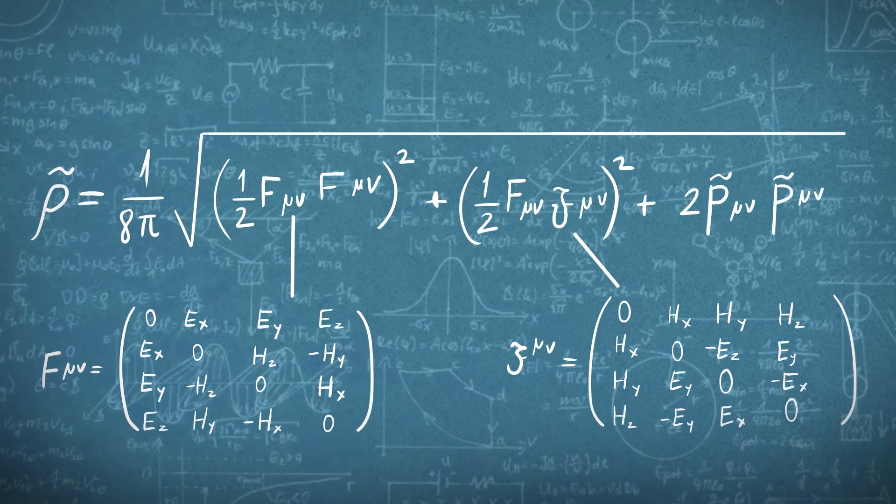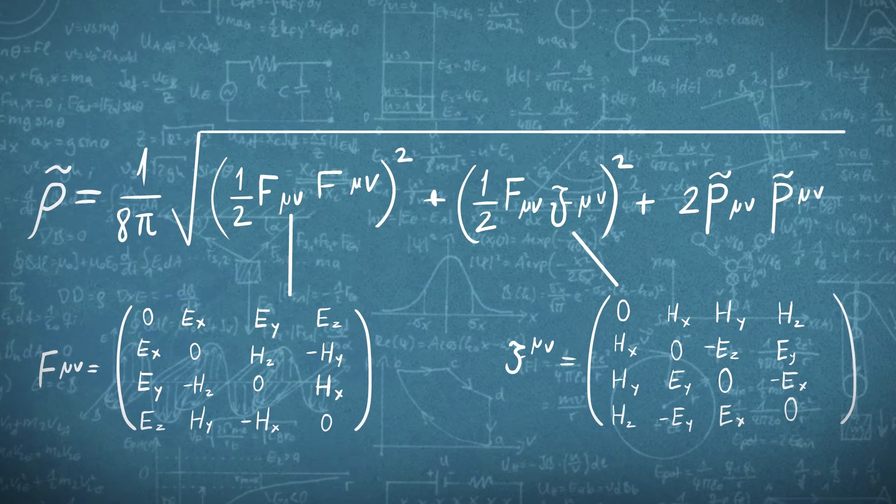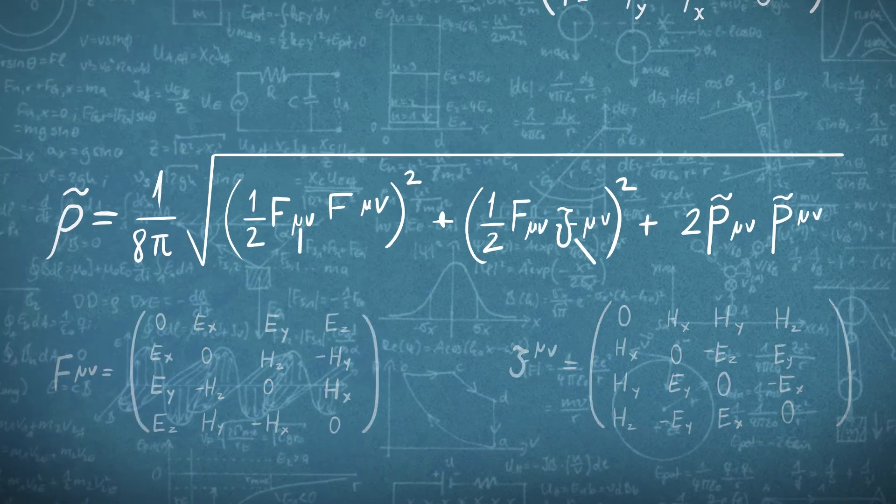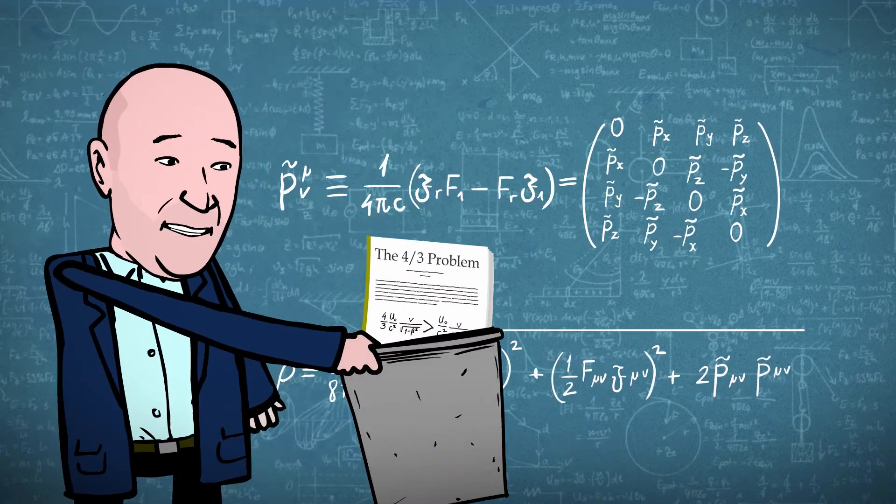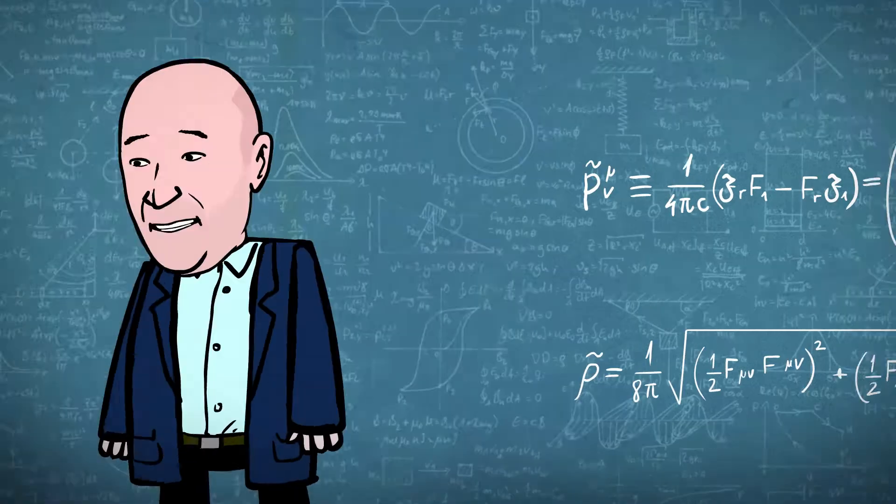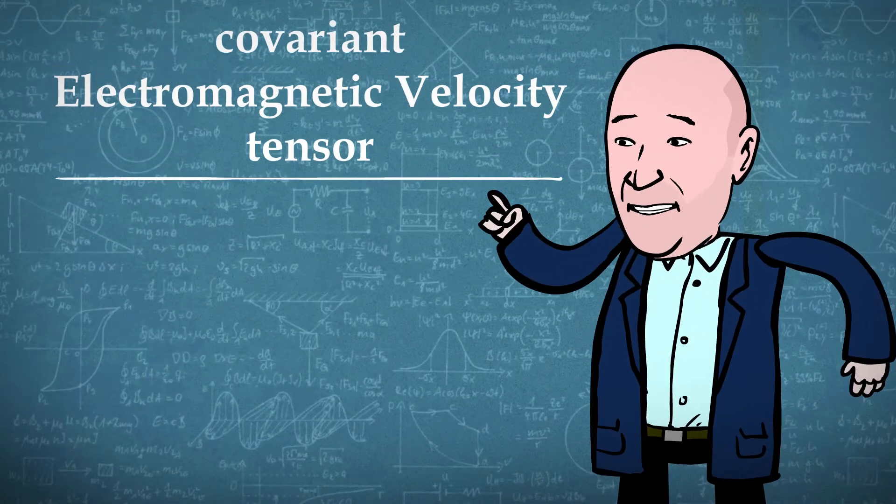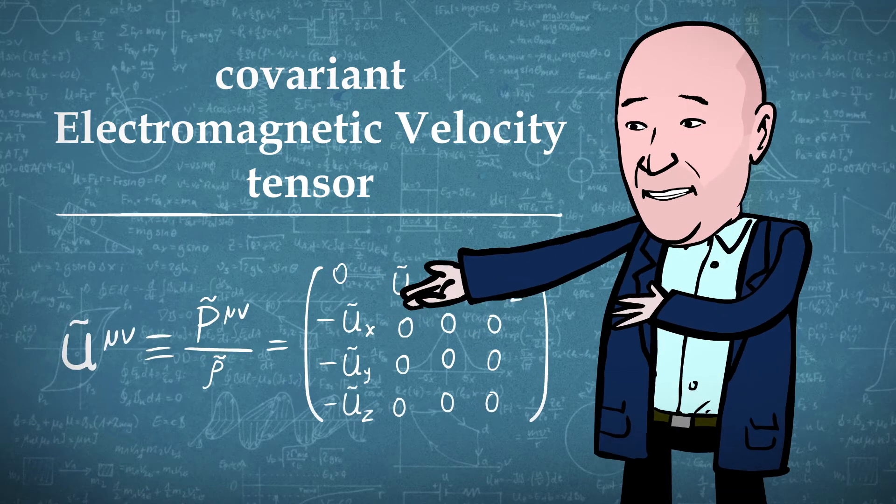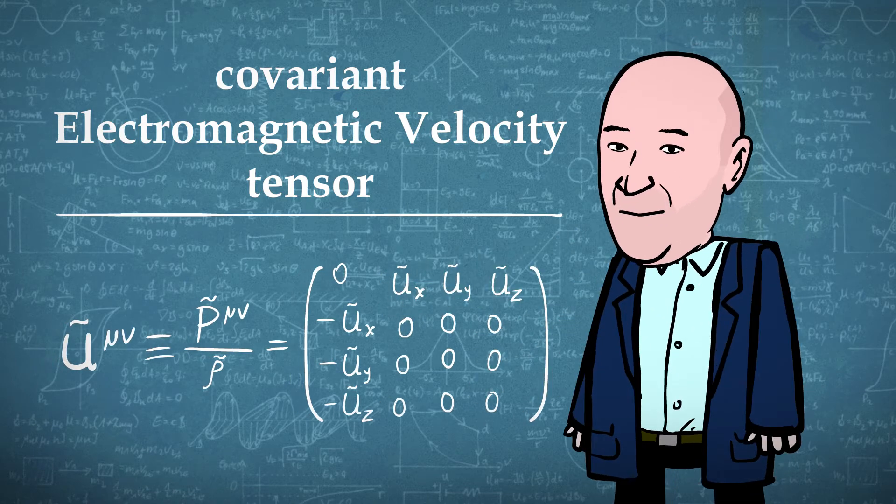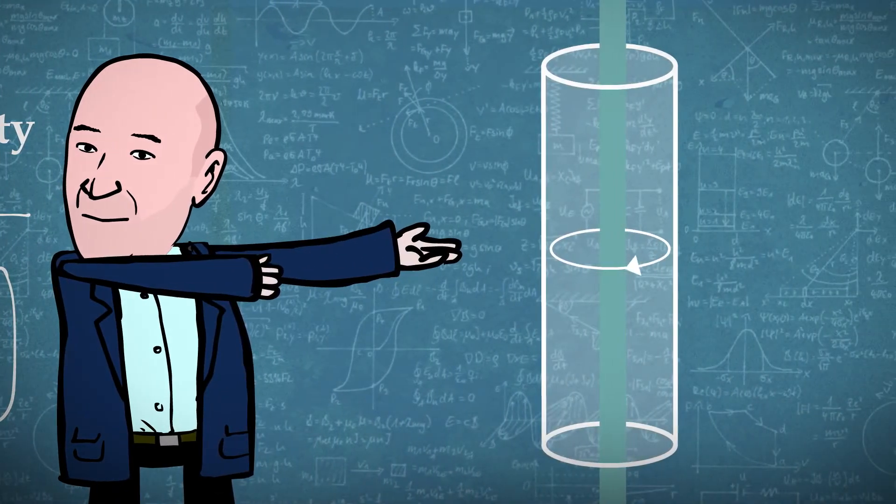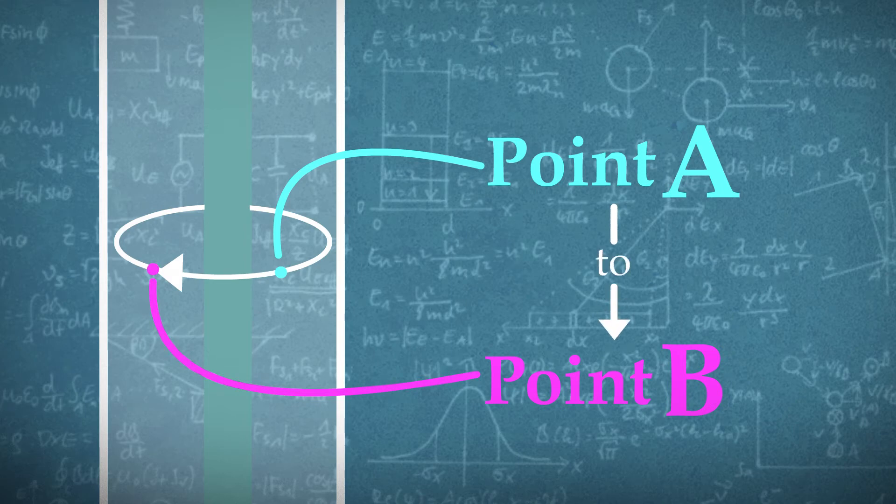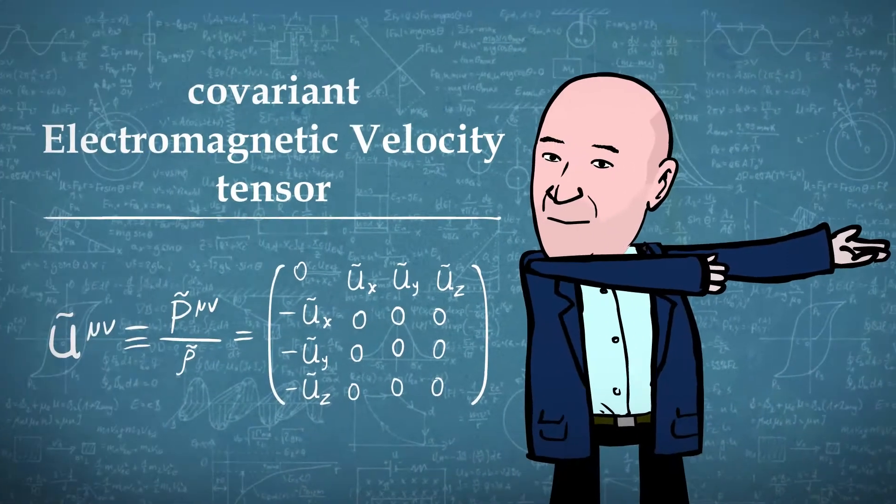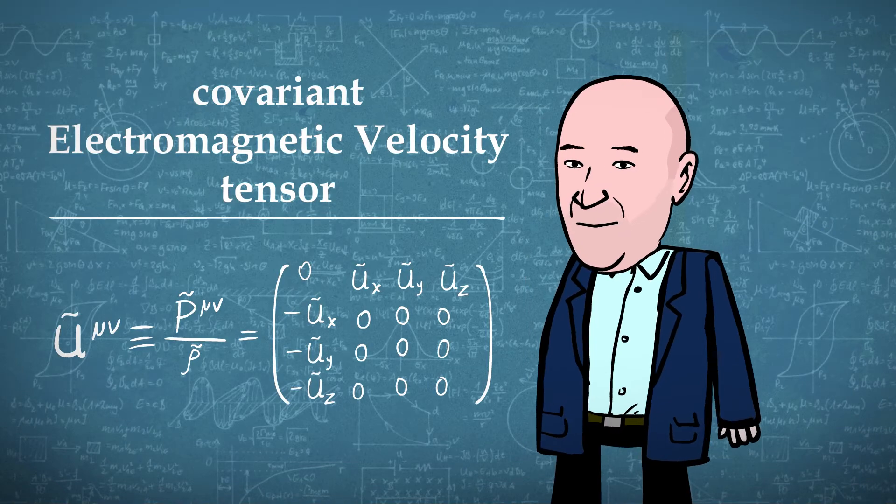With these new definitions, the four-thirds paradox disappears. We can now define the covariant electromagnetic velocity tensor. This velocity describes the rate at which electromagnetic momentum is transferred from one point to another inside the volume where the electromagnetic field exists.